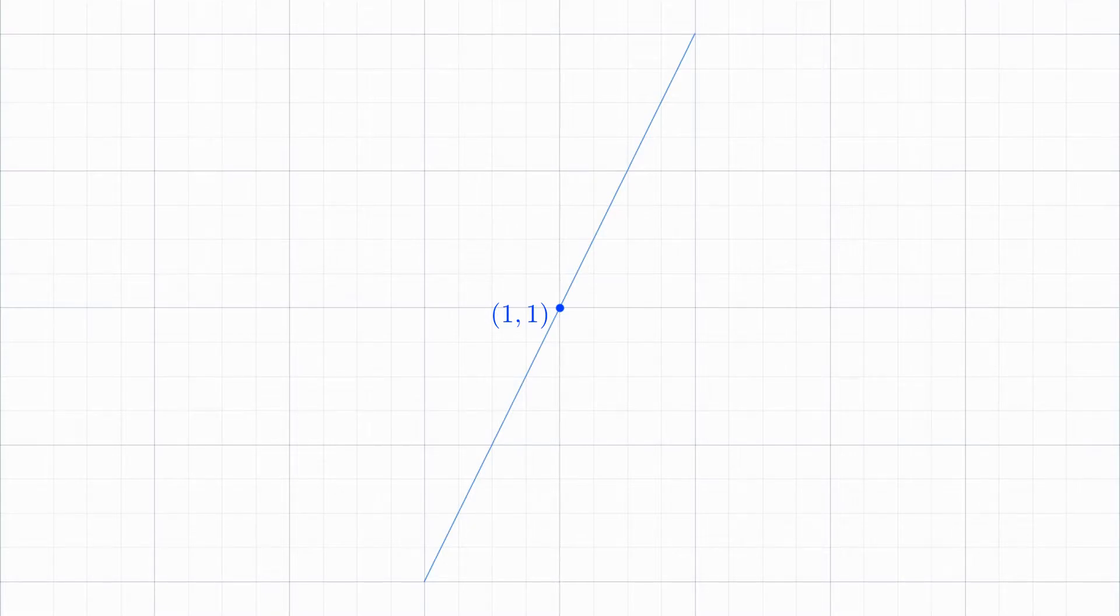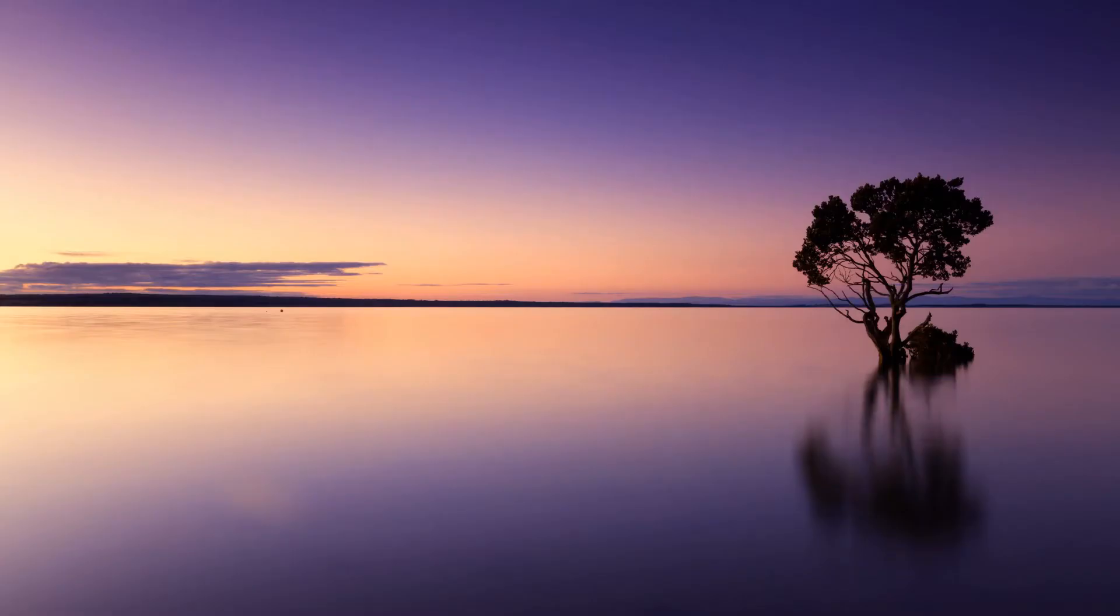But why did the graph look straight when we zoomed in? It's pretty much the same reason why the Earth's horizon looks flat from the surface. The closer you get to a curve or a circle, the flatter it looks.